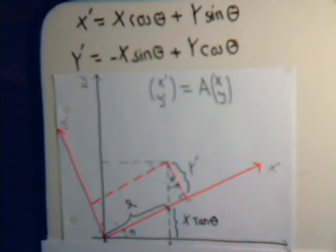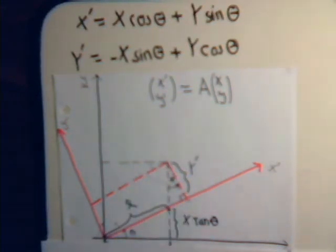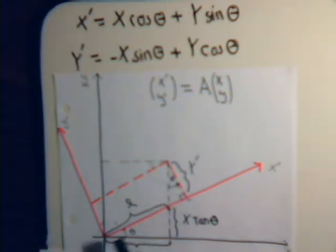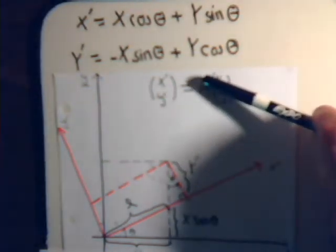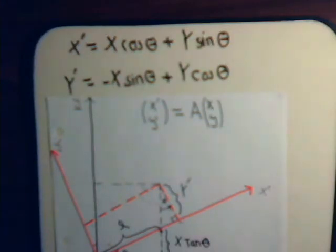In the last video we were continuing our discussion of orthogonal matrices. What we had derived is that if we have an xy axis system that gets tilted by an angle theta, so that we have a vector with x and y components as well as x prime and y prime components. In the last video we derived the components of the orthogonal matrix.